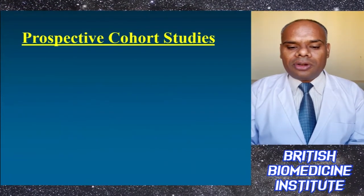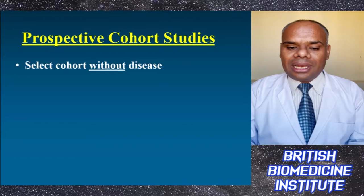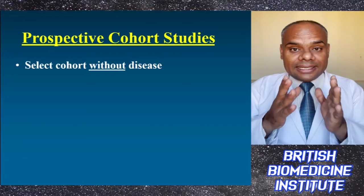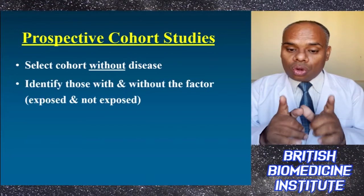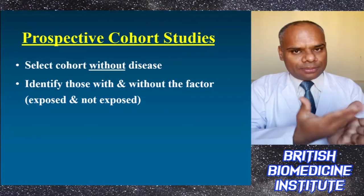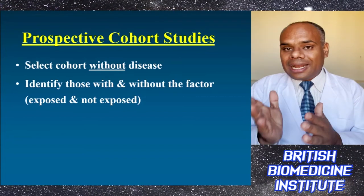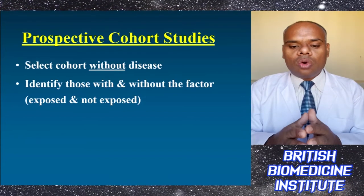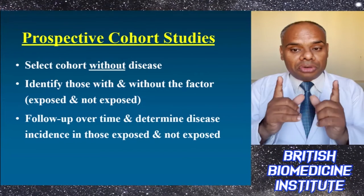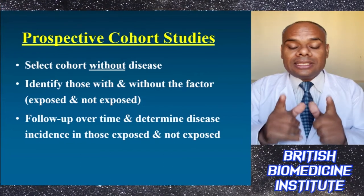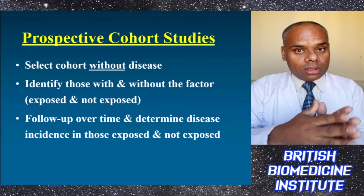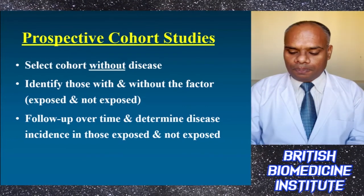Under prospective cohort studies, we select the cohort without a disease. We identify those with or without exposure — exposed versus non-exposed — and do a follow-up over time to determine the disease incidence in both the exposed and non-exposed patient groups.